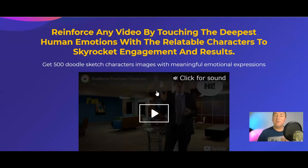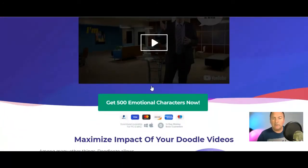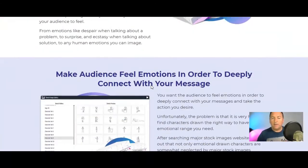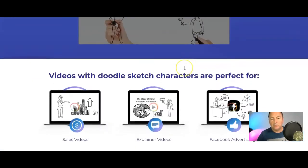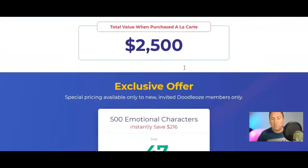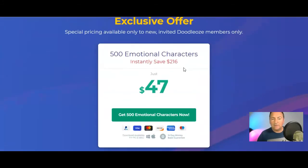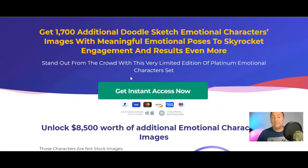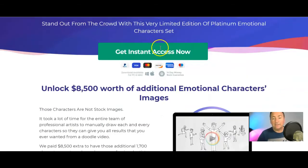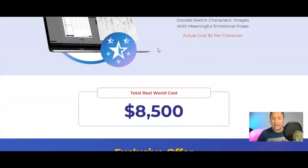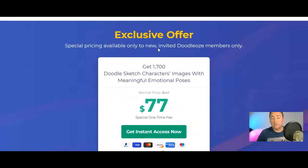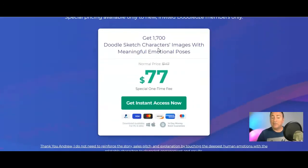This next one is a good one — the Emotional Characters. You get 500 emotional characters, which are characters showing emotion, so you can bring the human factor into your doodle videos. That's a $47 one-off charge. You're also going to get an upsell of 1,700 additional emotional characters — a real-world cost of $8,500 — for just $77 one-off.